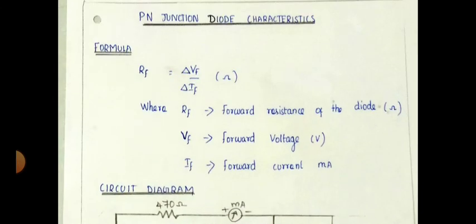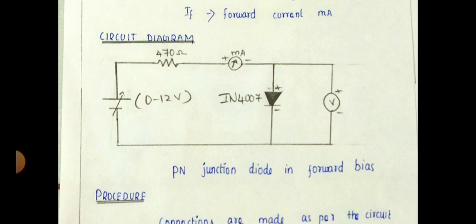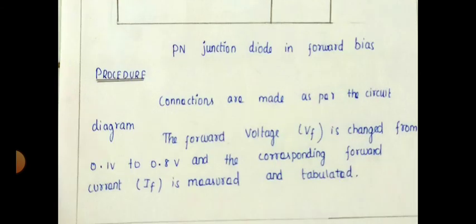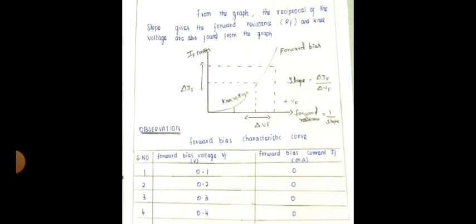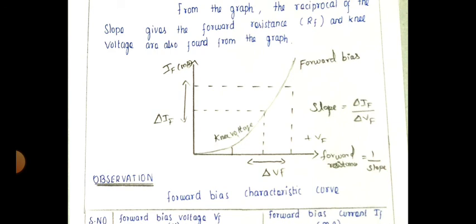Now the PN junction diode characteristics. The formula is: forward resistance Rf equals delta Vf by delta If. For the circuit diagram, in the examination they ask the forward bias, so I am giving only the forward bias diagram. If it is reverse bias, just change the direction of the current — that's enough. The procedure is only five points.